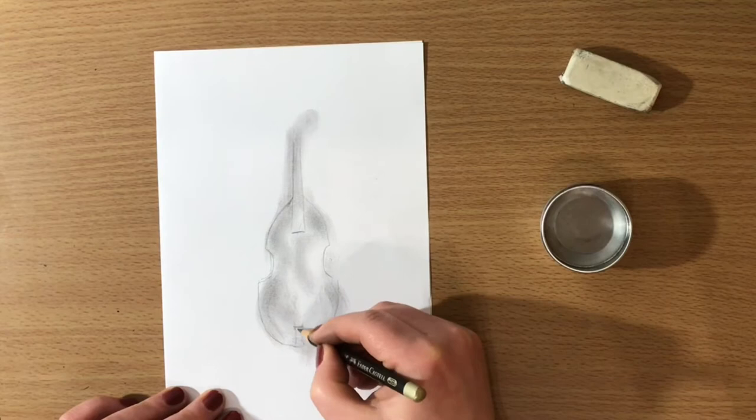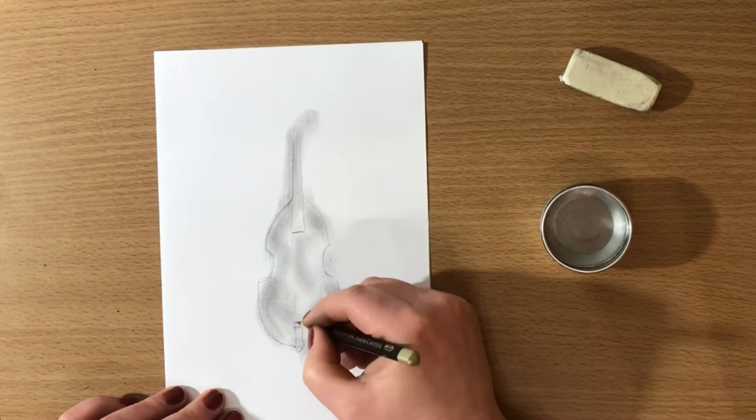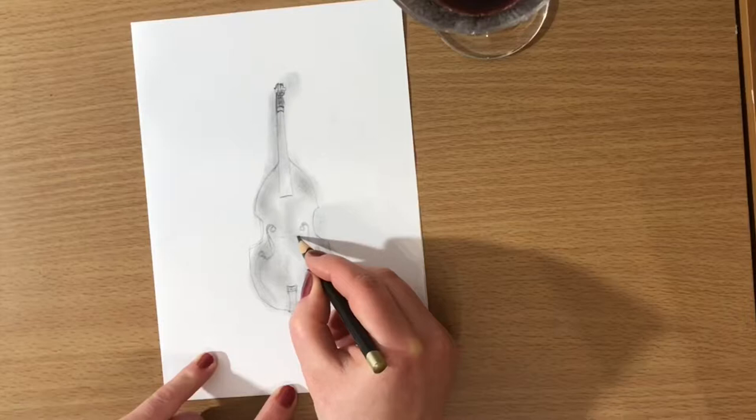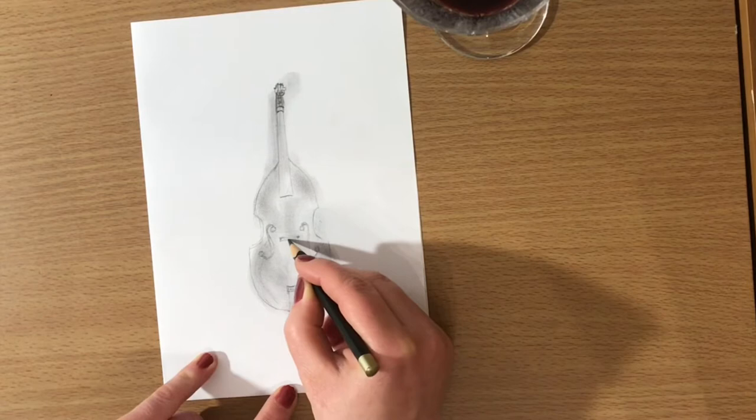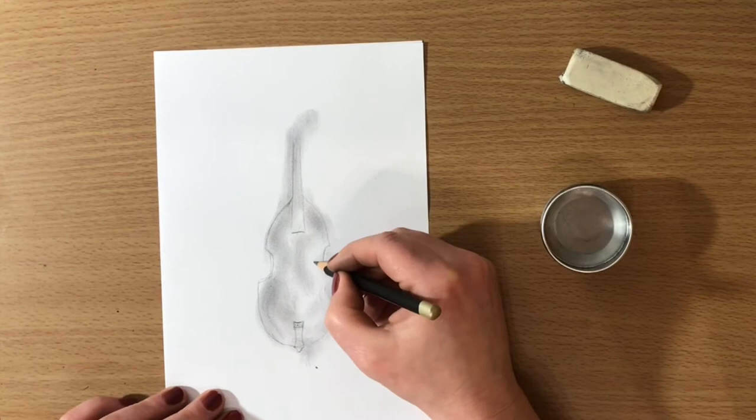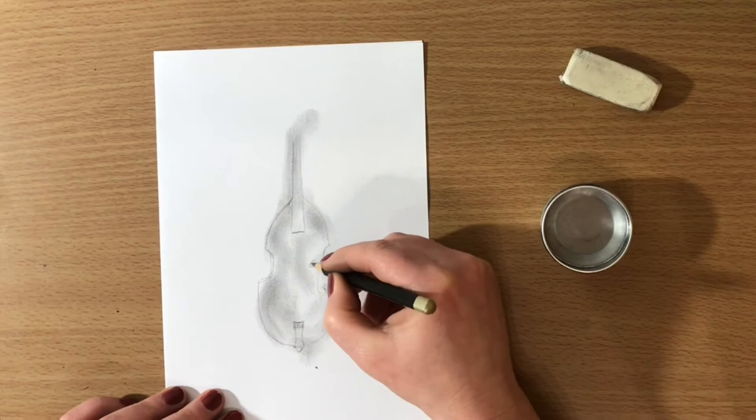In this moment I am drawing the tailpiece and now I will be drawing the bridge. It's a part of the instrument where the strings are elevated so that they can be at the perfect distance from the F holes.